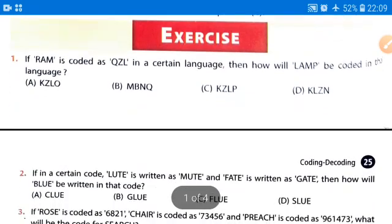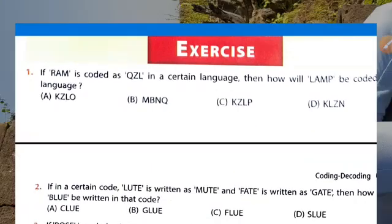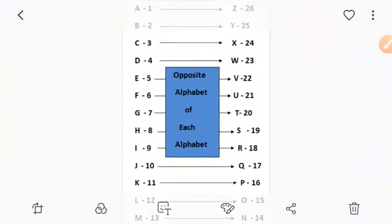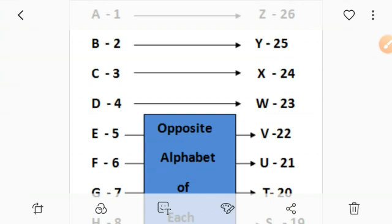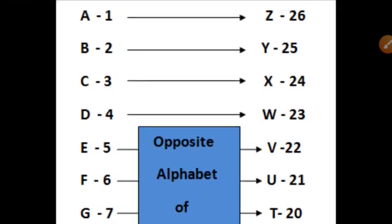Now coming to the exercise. Question number one: if RAM is coded as QZL in a certain language, how will LAMP be coded? Before starting, you must know the codes of the alphabets. A is our first alphabet, assigned 1.